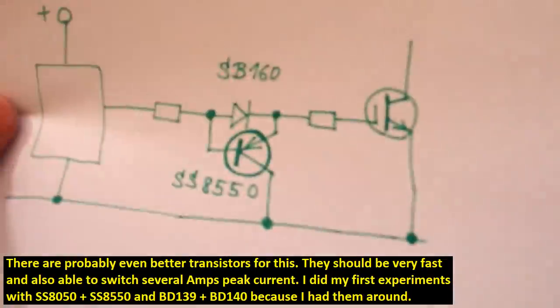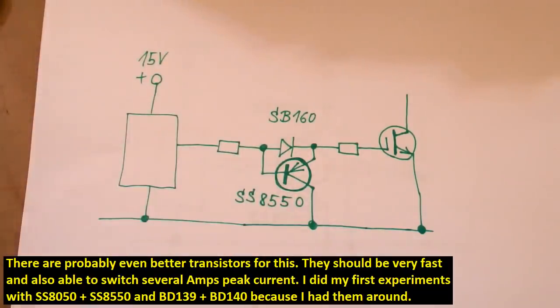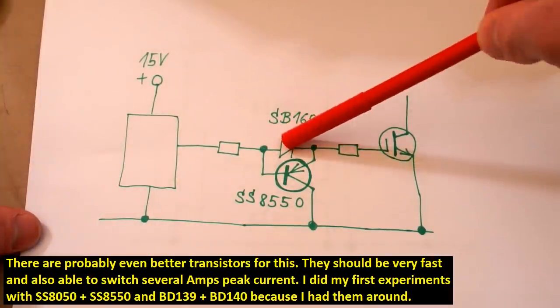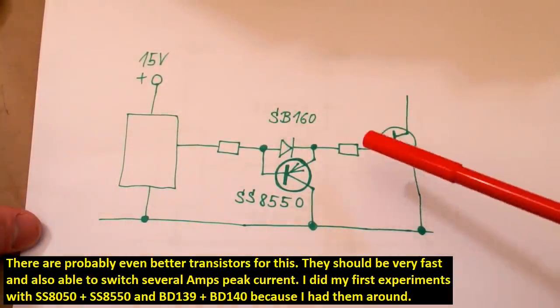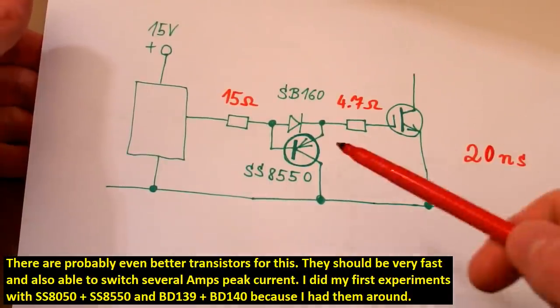But it's also possible to amplify just the discharging current and not the charging current, like here. Now the chip charges the gate via just this Schottky diode, but it discharges it via this amplifying transistor. And this is what I'm testing now.